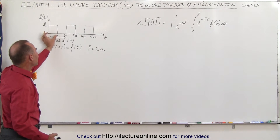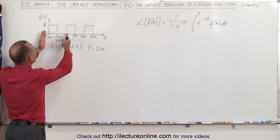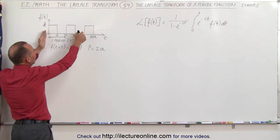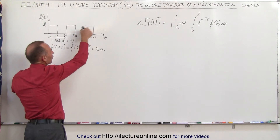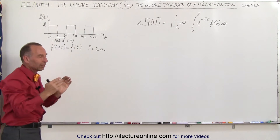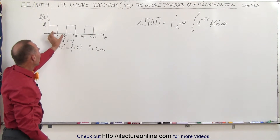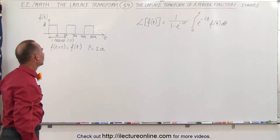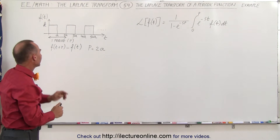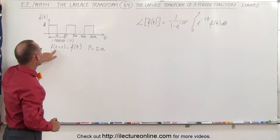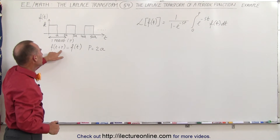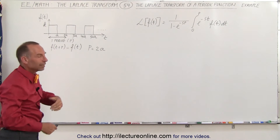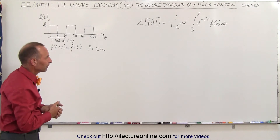So the pulse width is a and the period is 2a. Pulse width is a and then the rest is a and so forth. You can see that the distance between pulses is a and the pulse width of each is a as well. Keep in mind that f(t + p) must equal f(t) — that's what we mean by a periodic function.